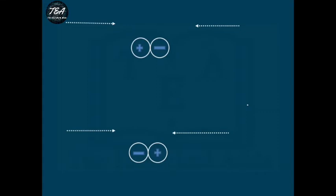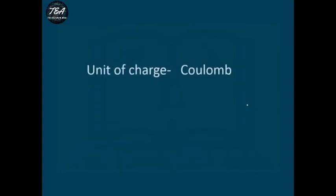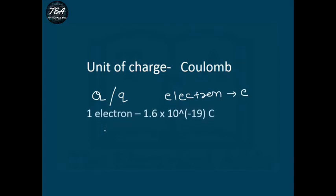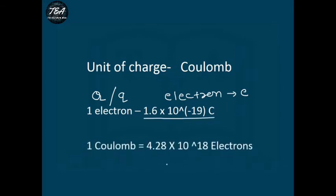Neutrons have no charge — they are electrically neutral. Same polarity charges tend to move away from each other, while opposite polarity charges tend to move toward each other. The unit of charge is the coulomb, denoted by the symbol Q (or q). The charge of one electron is 1.6 × 10⁻¹⁹ coulombs, so to have 1 coulomb of charge we require approximately 6.28 × 10¹⁸ electrons.